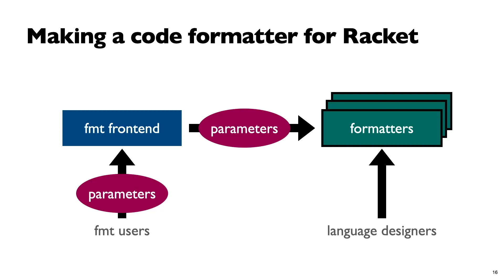FMT is essentially split into two parts: the front-end and the formatters. The front-end is the interface that FMT users interact with — they can provide parameters to adjust the front-end and the underlying formatters. The formatters are not provided by FMT itself; more generally, they are provided by language designers, and FMT simply relays the parameters to these co-formatters.